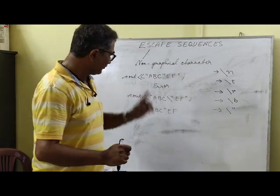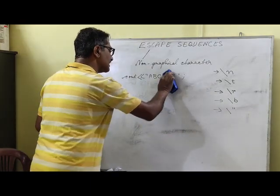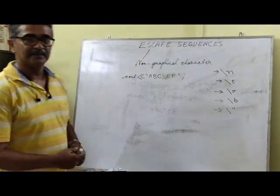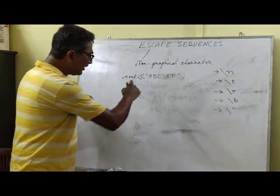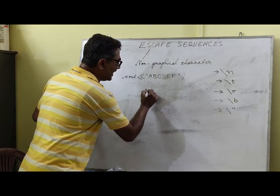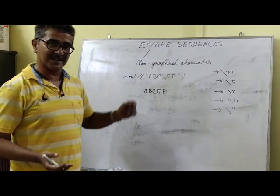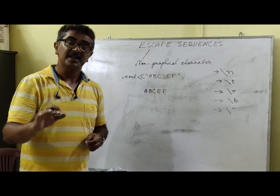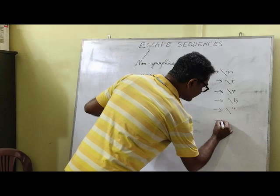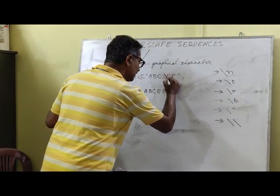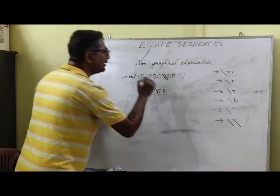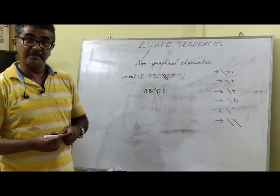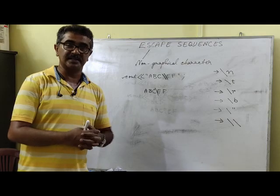Finally, if you want to display a backslash itself, you cannot write a single backslash in a string because every escape sequence begins with a backslash — it will not get displayed. For example, writing A B C backslash E F will only display A B C E F; the backslash disappears. To display a single backslash, use the escape sequence double backslash (two backslashes). The output will then show a single backslash. This concludes our overview of the most common escape sequences.